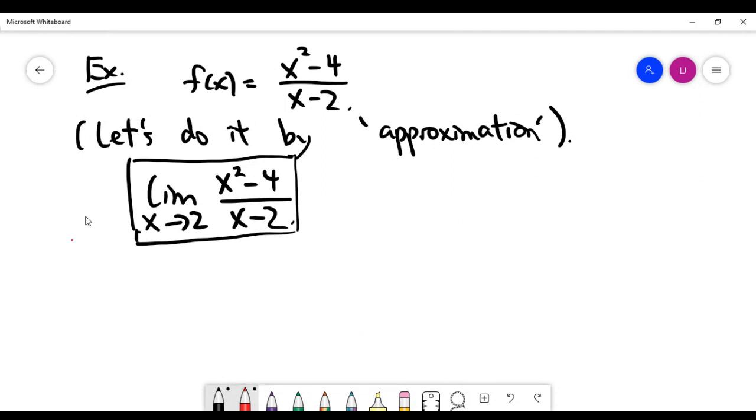We can approach 2 from the lower values of x. For example, I can actually choose something smaller than 2 to start with and every time move it up a little bit to make it look like x is actually approaching 2, right?